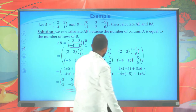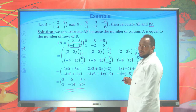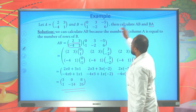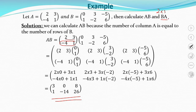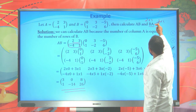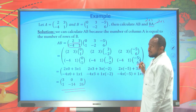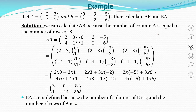To multiply B times A, let's check the sizes. Matrix B is 2 by 3, and matrix A is 2 by 2. To evaluate this product, the number of columns of the first matrix must equal the number of rows of the second. But the number of columns of B is 3 and the number of rows of A is 2 — these are not equal. Therefore, B times A is not defined and we cannot evaluate it.